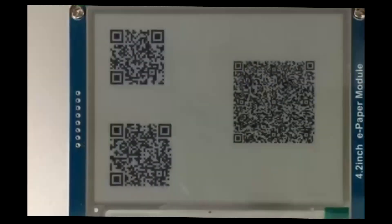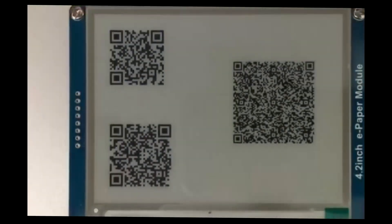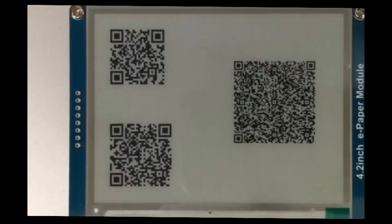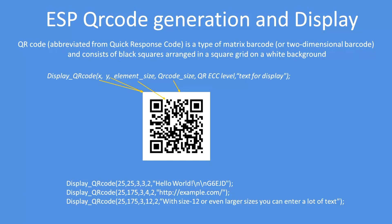QR codes — what are they? They are a form of two-dimensional barcode arranged in a square matrix form, using small black squares on a white background.